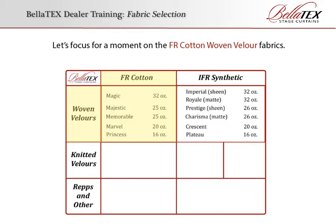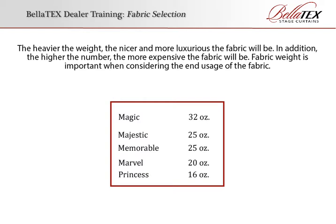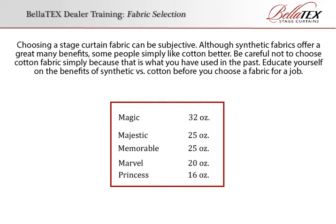The FR cotton woven velour fabric names all start with the letter M, except for Princess, which is a rarely used fabric. Memorable was historically the most utilized fabric for stage curtains, but is seldom used now. The heavier the weight, the nicer and more luxurious — and more expensive — the fabric will be. Fabric weight is important when considering end usage. Choosing a stage curtain fabric can be subjective; although synthetic fabrics offer many benefits, some people simply prefer cotton. Be careful not to choose cotton simply because it is what you have used in the past. Educate yourself on the benefits of synthetic versus cotton before choosing a fabric for a job.